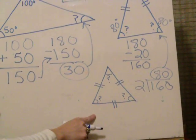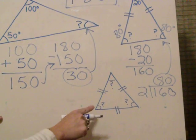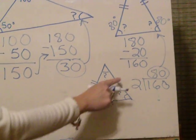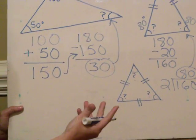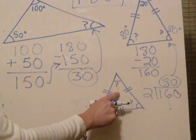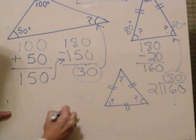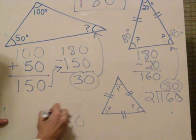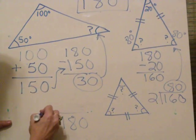The third kind of triangle I want to talk about is an equilateral. It has three equal sides. And guess what? It has three equal angles. So to figure out what each angle is, I can just take 180 and divide it by 3.